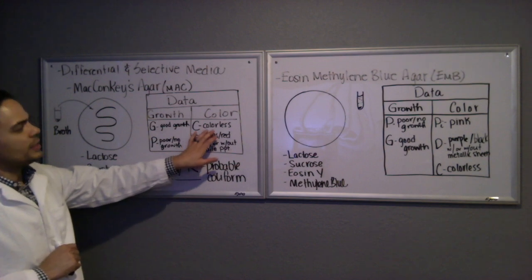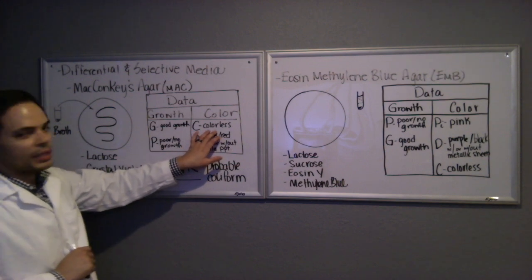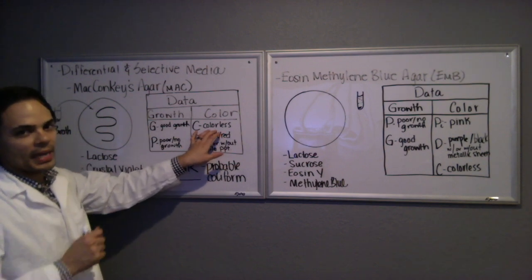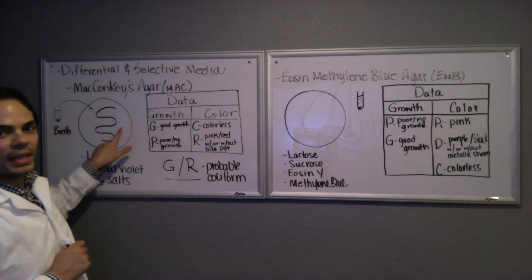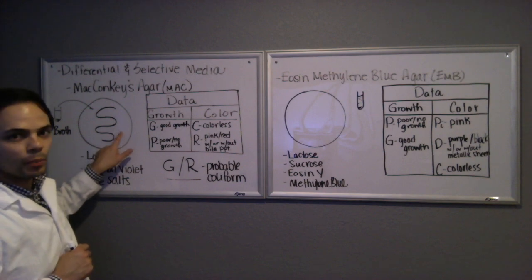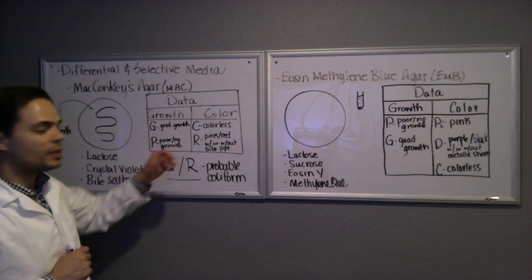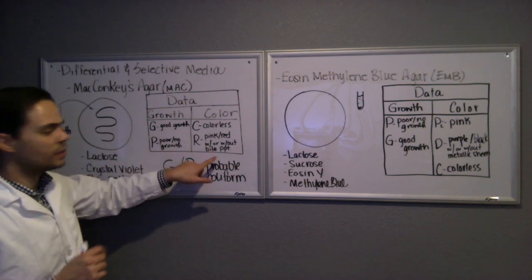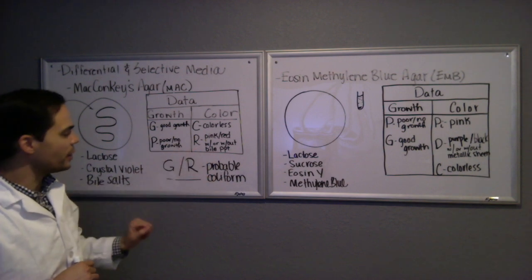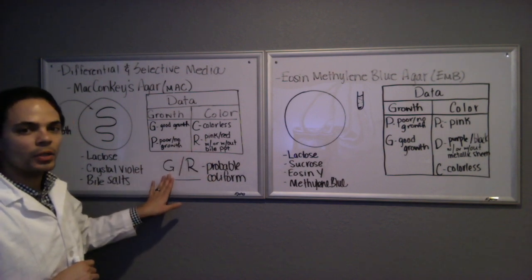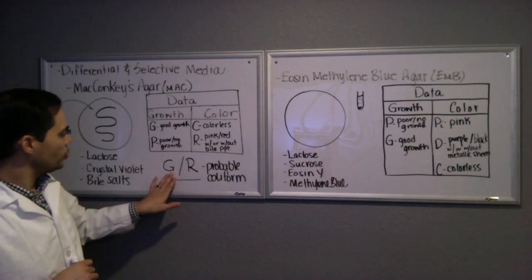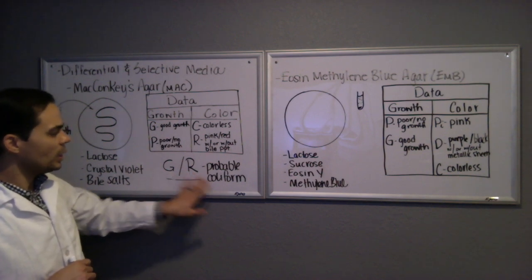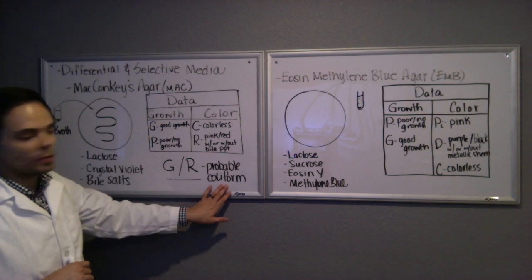If it was colorless growth, then we put a C, and that means it didn't ferment any lactose. If it turns red or if it turns red and surrounding it is pink bile precipitate, which only forms under acidic conditions when the lactose is fermented, then you still put an R there. So let's say ours had good growth and it was pink, and those two things combined will lead us to conclude that this was a probable coliform.